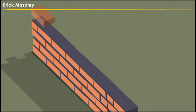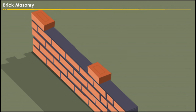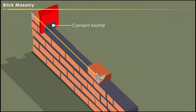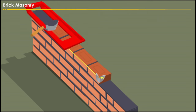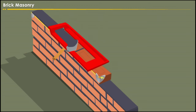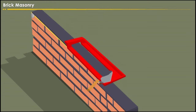For one brick thickness wall construction, start the construction by first laying the header face. Keep two bricks each at one end by placing the cement mortar below it. Temporarily fix the mason mate and tie a thread at the top corners as shown on the screen. Place the cement mortar by using the vertical guide. Finish the header row and place the cement mortar above it with the horizontal guide. Continue the same process for the stretcher row.